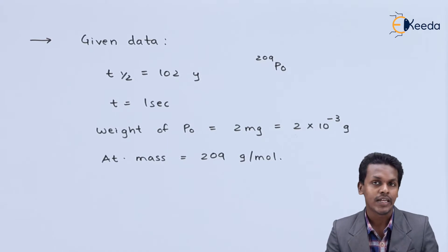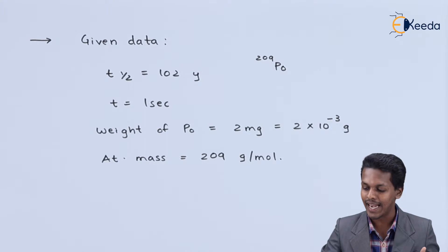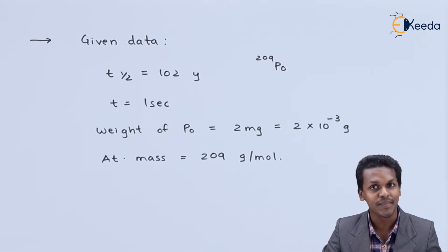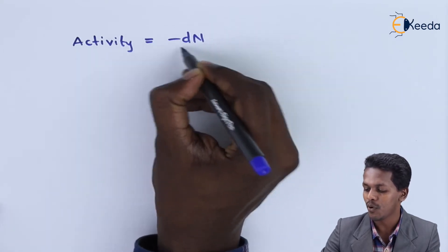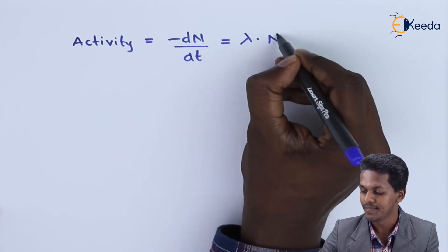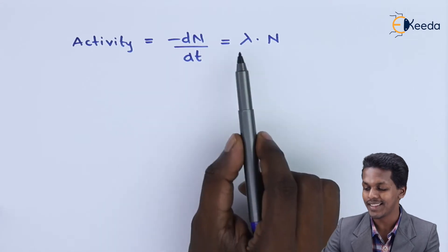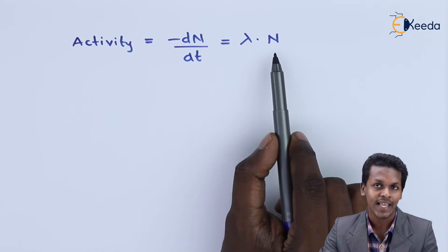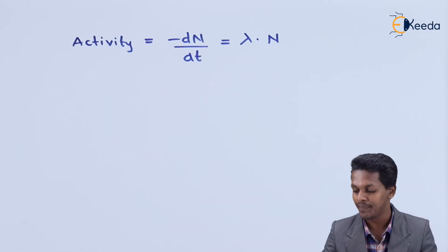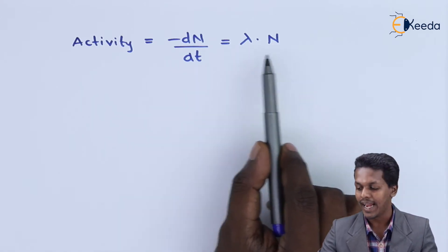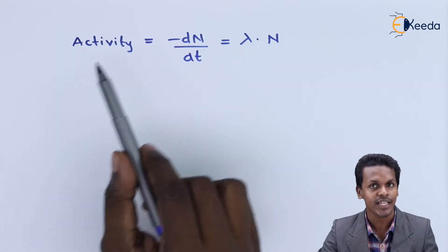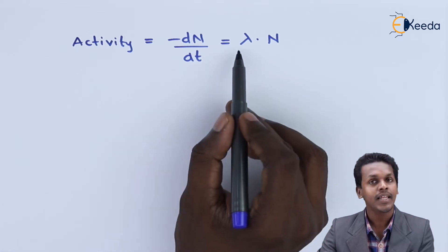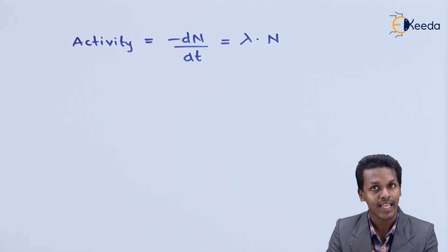This is all the data extracted from the question. Now let us identify the formulas to use. Since we have to find the activity, the formula is: Activity = −dN/dt = λN. We need to calculate the decay constant λ using the half-life, and calculate the number of atoms N from the 2 milligram sample. From these two values we can calculate the activity.